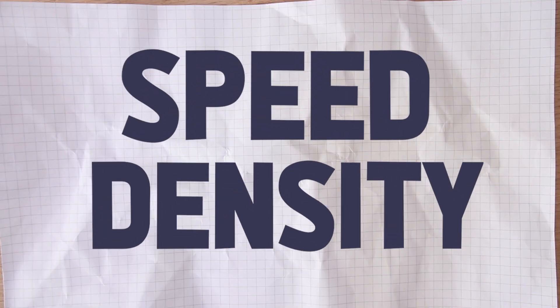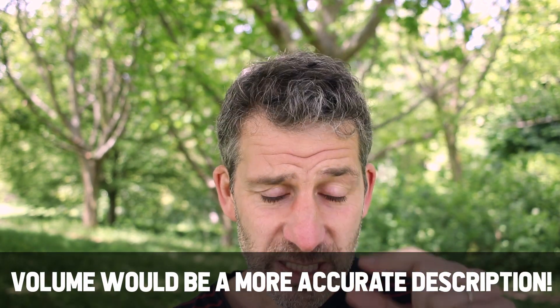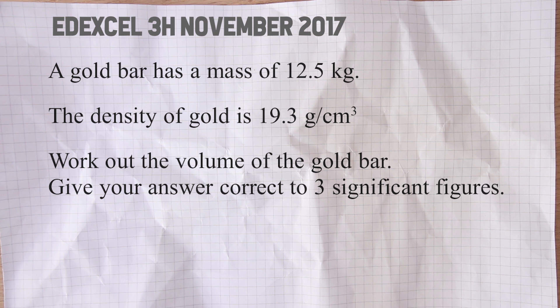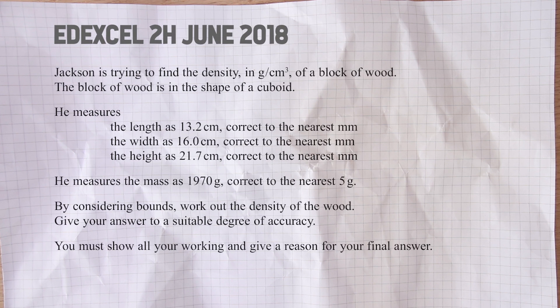The first thing: speed and density type questions. Speed and density are two examples of what we call compound measures, where you're combining two different measures. Speed, for example, is combining distance and time — how long does it take you to go a particular distance. Density is the same: we're combining mass with the size of something. In other words, what is the mass for a particular size — a piece of wood might be 0.6 grams for every cubic centimeter of wood.